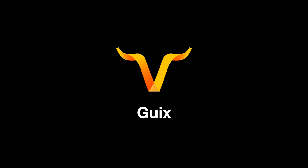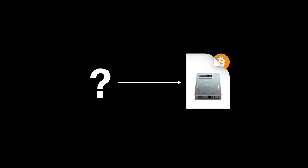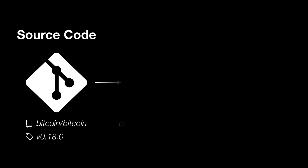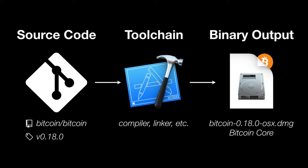Let's go back to this disk image that you downloaded. Where did this disk image come from? How was it made? We know that all software was computer source code at some point, and in our case we expect this to be the Bitcoin source code at version 0.18. The source code is fed as input to a toolchain, including compilers, linkers, archivers — the whole shebang — which then builds the source code into the binary output, which is the disk image file you downloaded.